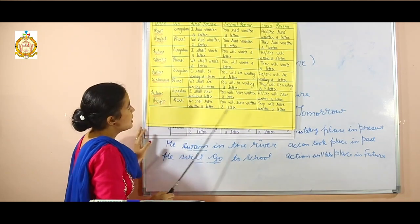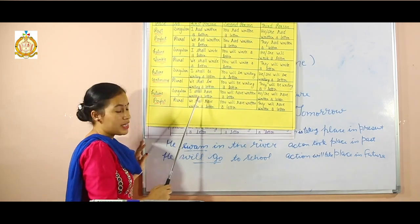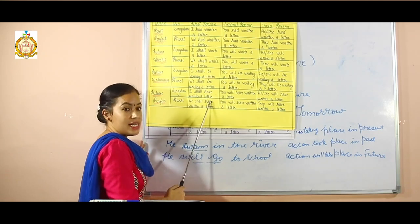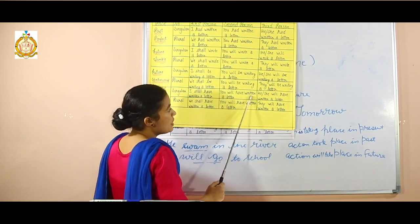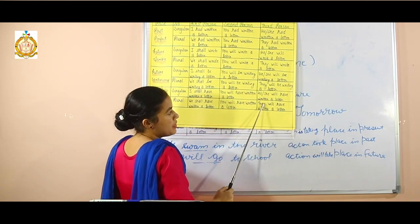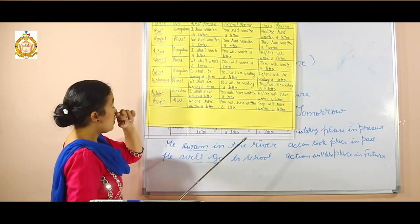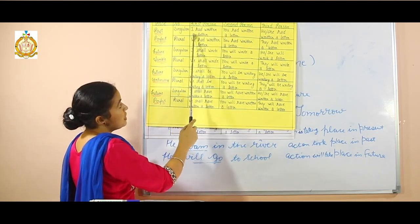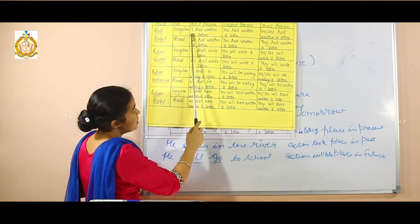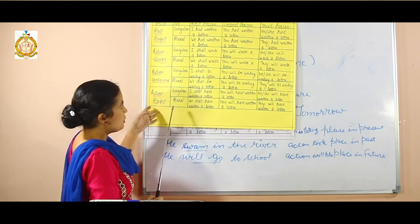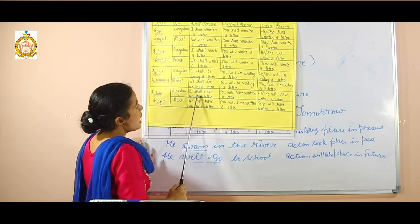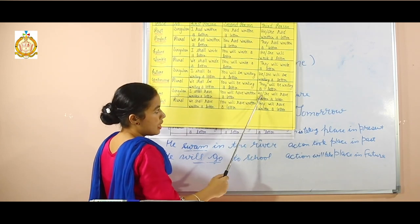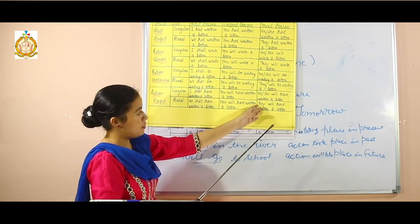Then comes future perfect tense. In future perfect tense: 'I shall have written a letter.' 'You will have written a letter.' 'She will have written a letter.' In past perfect tense we use 'had' for all persons. In future perfect tense, we use 'I shall', 'you will', 'we shall' with 'have' and the third form of the verb.